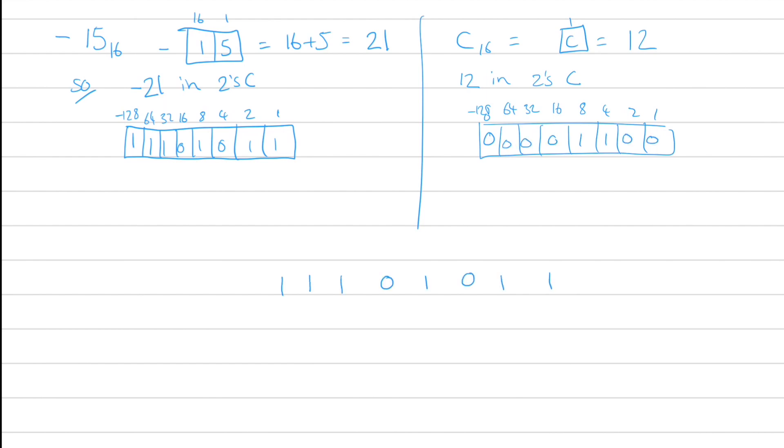Adding those together is reasonably simple. 1 plus 0 is 1. 1 plus 0 is 1. 0 plus 1 is 1. 1 plus 1 is 0, or 2, so it's 1. We carry the most significant value there. We then got 0 plus 0 plus the carried value of 1, which is 1. 1 plus 0 is 1. 1 plus 0 is 1. And 1 plus 0 is 1.